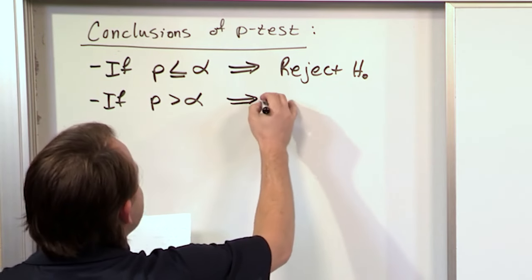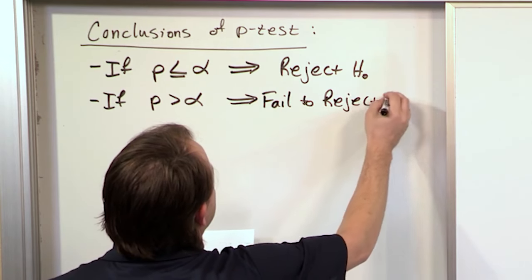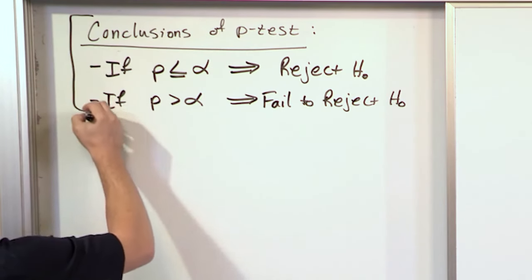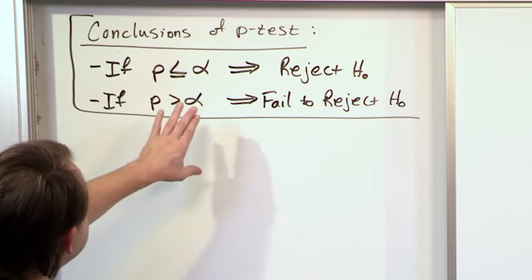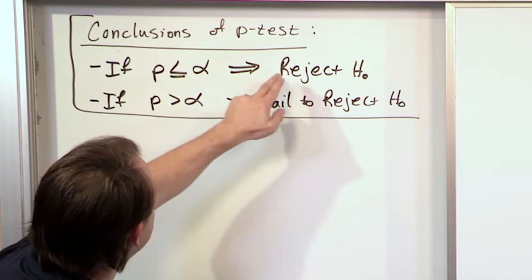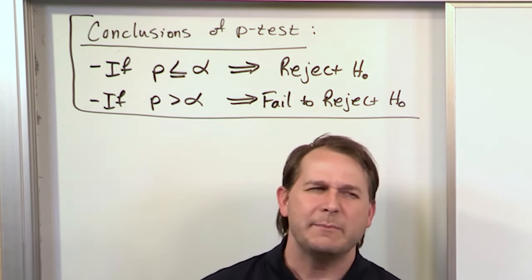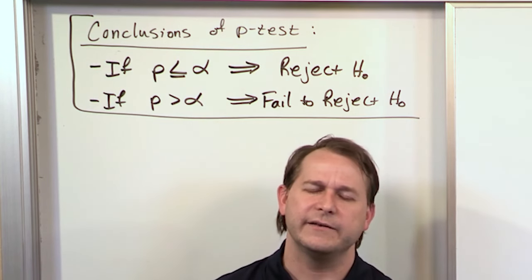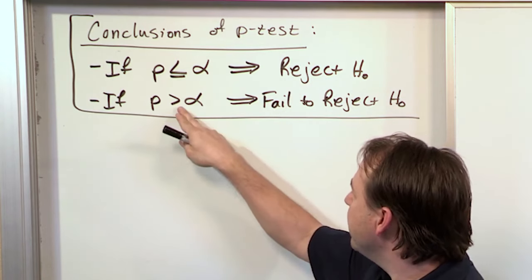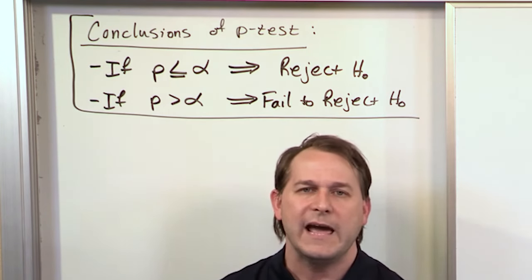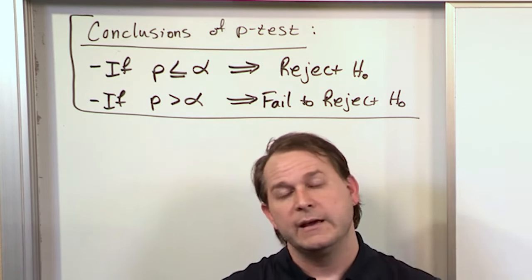The p-value is still going to tell you when you reject a hypothesis or fail to reject a hypothesis — doing the same job as before in a slightly different way. We have criteria: if the p-value p is less than or equal to alpha, the level of significance, then you reject the null hypothesis. If the p-value is greater than alpha, then you fail to reject the null hypothesis.